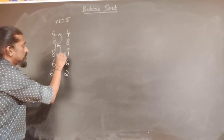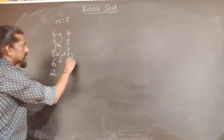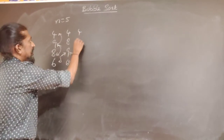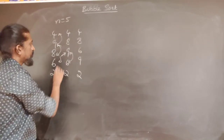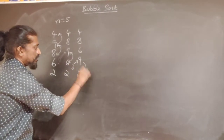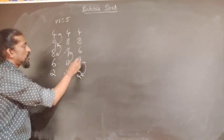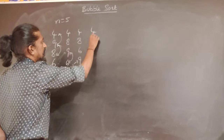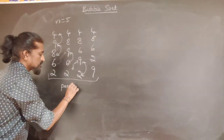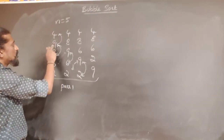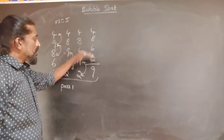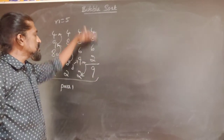We move j to the third element and compare third and fourth — out of order, so we swap: 4, 8, 6, 9, 2. Then we move j to the fourth element and compare fourth and fifth — out of order, so we swap: 4, 8, 6, 2, 9. This completes one pass of bubble sort. The largest element, 9, has gone to its final sorted position. We now repeat the same procedure on the remaining four elements.